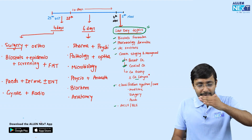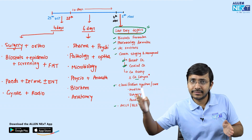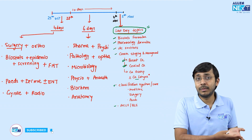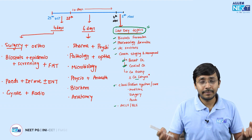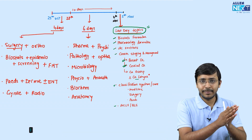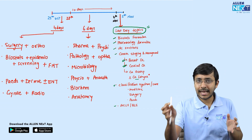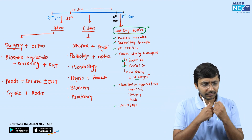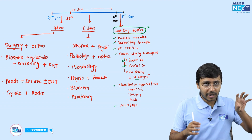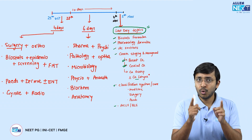Biochemistry and Anatomy are super high-yield — you cannot afford not to revise them before the exam. I've kept Biochem and Anatomy towards the end of the revision, near the exam, because they are very volatile. Glycogen storage diseases, lysosomal storage diseases, familial dyslipidemias — nobody remembers the enzyme deficiency and disease name if they haven't revised recently.